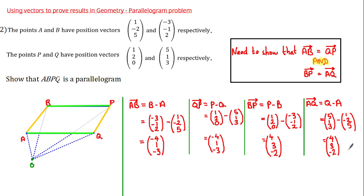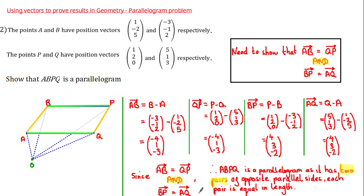So let's finish with a conclusion. Since vector AB equals vector QP and vector BP equals vector AQ, it follows that ABPQ is a parallelogram, as it has two pairs of opposite parallel sides where each pair is equal in length. I hope you found that tutorial useful — keep up the good work and I'll see you in the next tutorial.